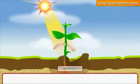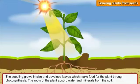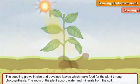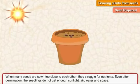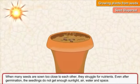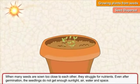The seedling grows in size and develops leaves, which make food for the plant through photosynthesis. The roots of the plant absorb water and minerals from the soil.